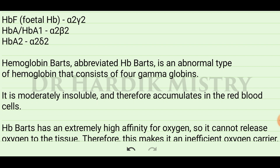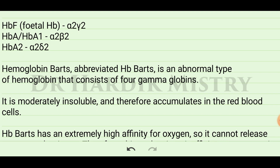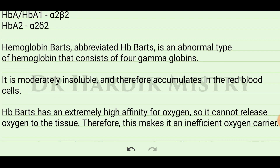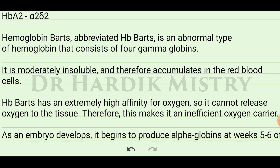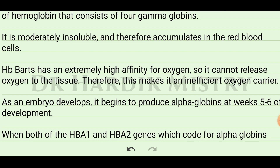Hemoglobin Barts is an abnormal type of hemoglobin that consists of 4 gamma globulin chains. Normally, only 2 gamma globulin chains are present in fetal hemoglobin, with the normal structure being alpha-2 gamma-2. HB Barts is moderately insoluble and therefore accumulates in red blood cells. It has an extremely high affinity for oxygen, so it cannot release oxygen to the tissues.